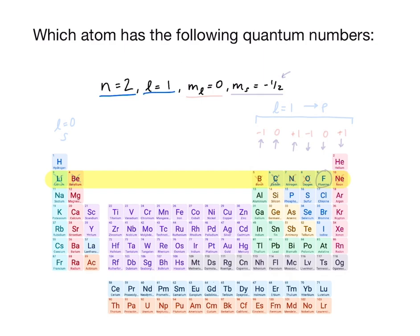The next quantum number l tells us which subshell we're in. l equals 0 indicates the s subshell, so we know that l equals 1 tells us we are in the p subshell. That eliminates these two elements and we can move on to m sub l.